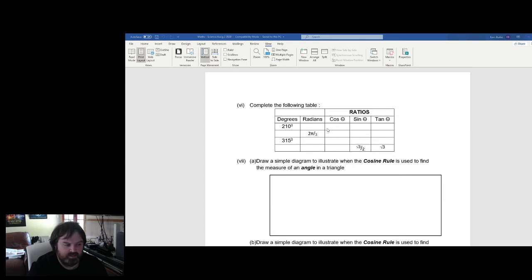So apply the same logic there and figure it out. So you need to get 210 degrees. You need to figure out what that is in radians, what cos 210 is, what sine 210 is, what tan 210 is. And then you know that's 2 pi over 3. So you need to convert that from radians back to degrees, then find the cos of that, the sine of that, the tan of that. 315 degrees, what's that in radians? Cos, sine, tan. And this one here, you're given the answers. You're going to need to sine inverse and tan inverse that and find out what the answer is and just fill that table in.